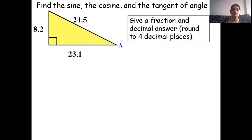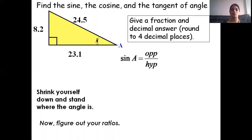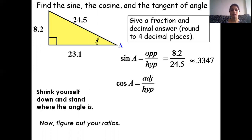Problem number two: find the sine, cosine, and tangent of angle A. In this figure, the hypotenuse value is 24.5, the opposite side of A is 8.2, and the adjacent side of A is 23.1. Sine A equals opposite over hypotenuse, which is 8.2 divided by 24.5, equal to 0.3347. Cos A equals adjacent over hypotenuse, which is 23.1 divided by 24.5, equal to 0.9429.